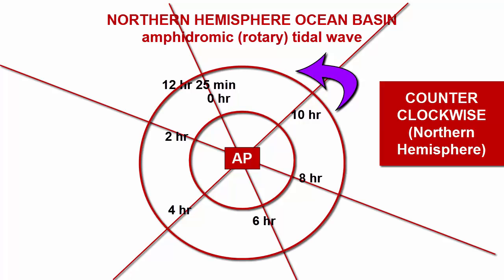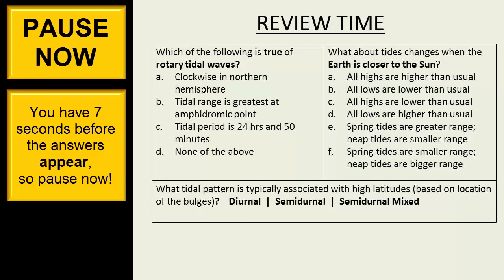Next, we add the corange lines as concentric circles, and we label them with increasing tidal ranges as we move outward from the amphidromic point. Pause now.